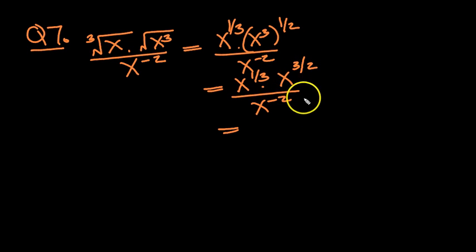Now you add one-third and 3 over 2, change to sixths, that's 2 sixths and 9 sixths, so that'll be 11 sixths on top.